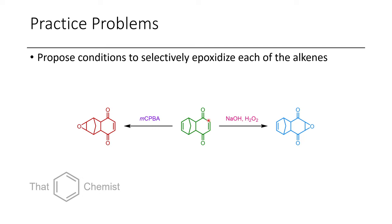Now the alkene on the right is electron-deficient, and so to add an epoxide to this position, we need to use a nucleophilic oxidizing agent. This is why we use hydrogen peroxide under basic conditions. If you're curious about the mechanism of how that occurs, I'd encourage you to check out the last video.